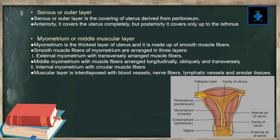The myometrium or middle muscular layer is the thickest layer of the uterus and is made up of smooth muscle fibers. These fibers are arranged in three layers: external myometrium with transversely arranged muscle fibers, middle myometrium with muscle fibers arranged longitudinally, obliquely, and transversely, and internal myometrium with circular muscle fibers. The muscular layer is interspersed with blood vessels, nerve fibers, lymphatic vessels, and areolar tissue.